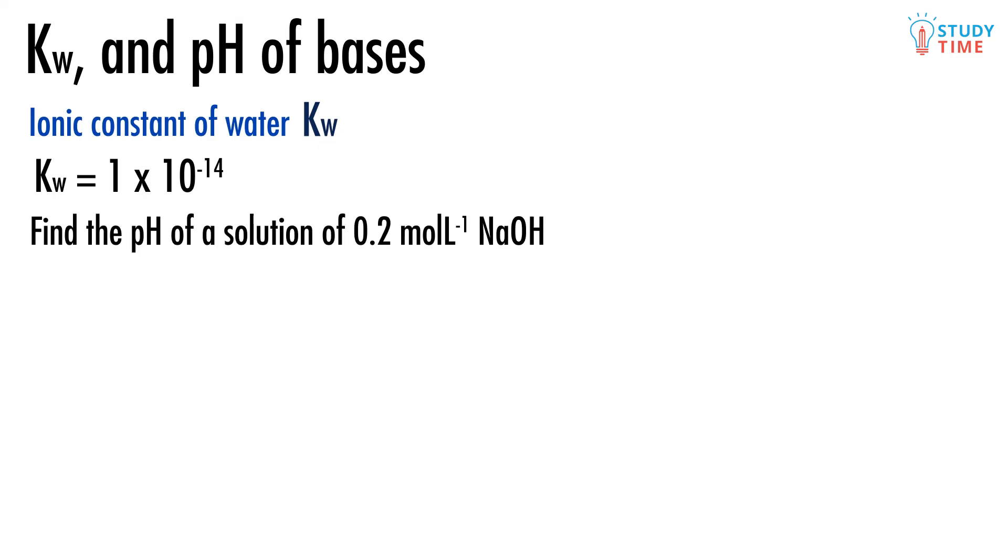For example, find the pH of a solution of 0.2 moles per liter of sodium hydroxide. We begin by using the Kw equation to find the concentration of hydronium ions. 1×10^-14 = [H3O+][OH-] = [H3O+] × 0.2.